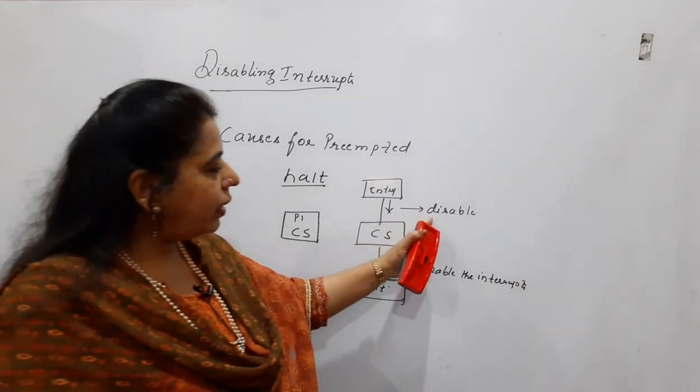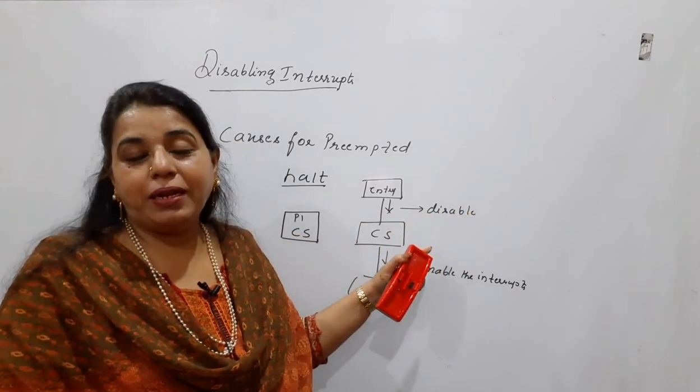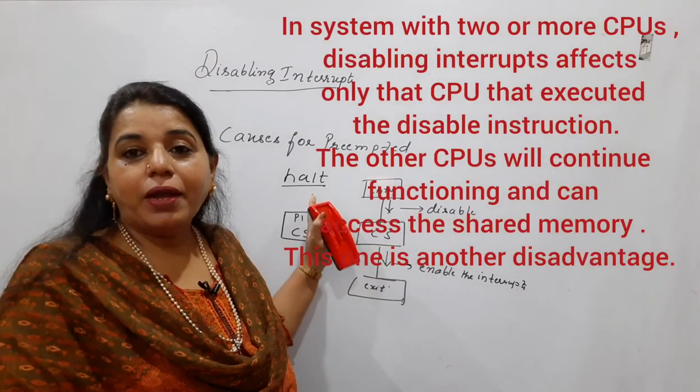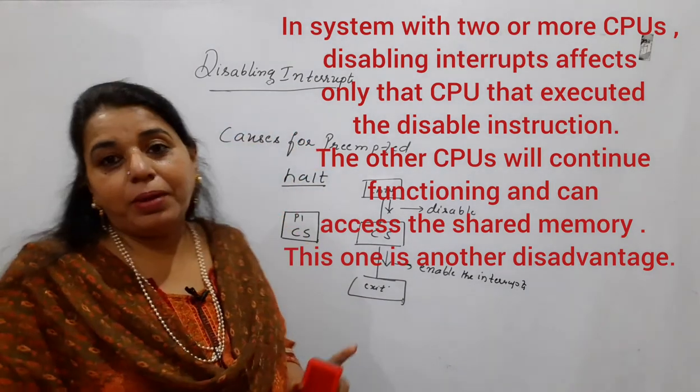And what you are doing is you are giving the authority for a user level process to disable the interrupts. That is also not advisable. So this is not at all a good idea to solve the critical section problem using the disabling interrupts concept.